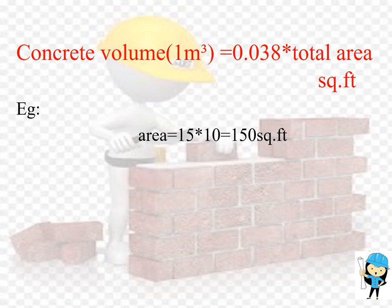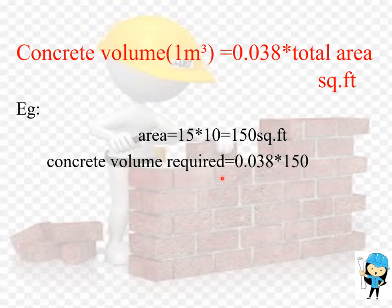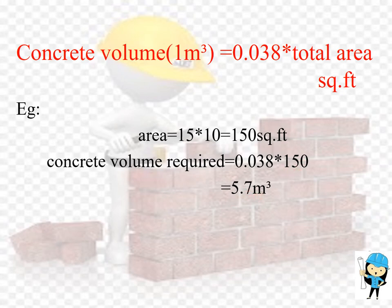Now we are going to calculate the volume of concrete required for 150 square feet. The concrete volume required is equal to 0.038 times the total area, that is 150 square feet. So we get the amount of concrete volume required for 150 square feet as 5.7 meter cube.